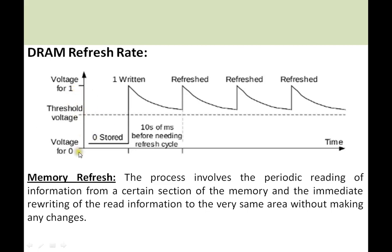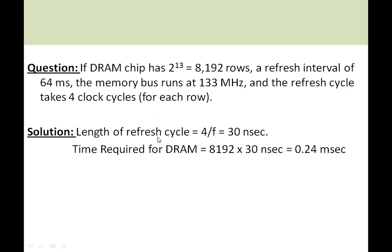Whenever voltage corresponding to bit 1 is stored, after every certain period of time — defined by the manufacturer — it needs to be refreshed, meaning charged again to the voltage corresponding to bit 1. This process involves the periodic reading of information from a certain section of the DRAM memory and immediate rewriting of the same read information back to the same area without making any changes.